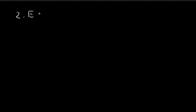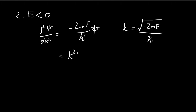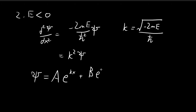Now we test the second case when the energy level is smaller than zero. We have negative 2mE divided by h-bar squared times psi. We let k equal the square root of negative 2mE divided by h-bar. Since E itself is negative, negative E is positive, so it is perfectly fine to take the square root. With this definition of k, the differential equation becomes the second derivative of psi equals k squared times psi, and the solution is A times e to the power of kx plus B times e to the power of negative kx.